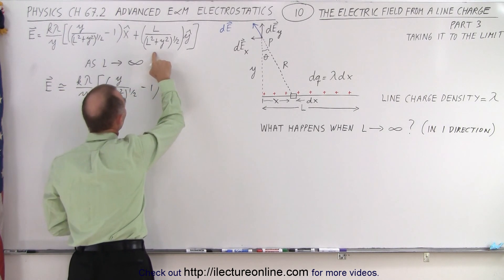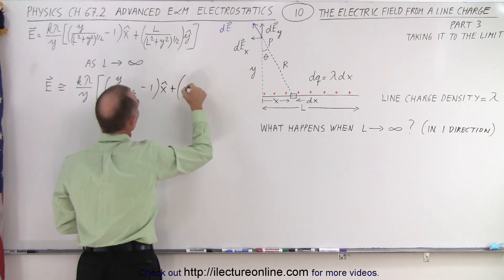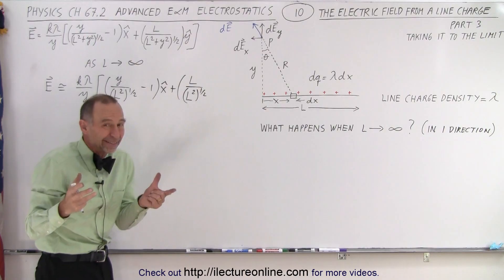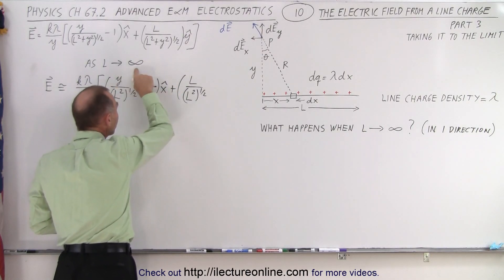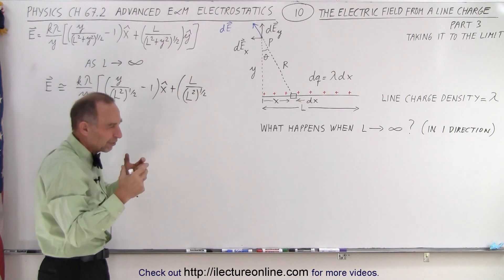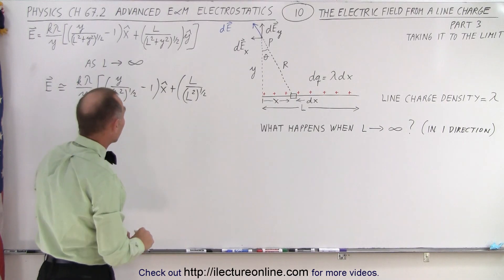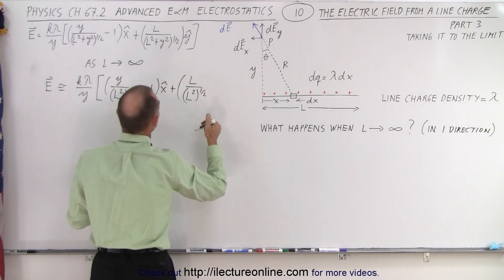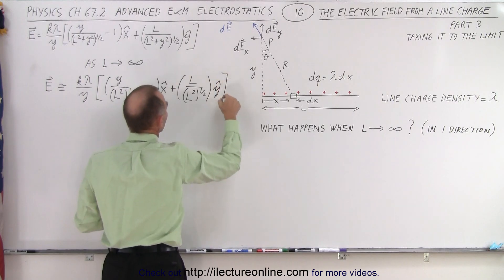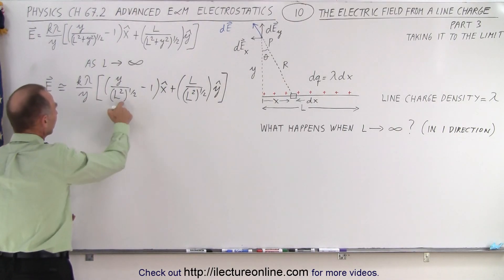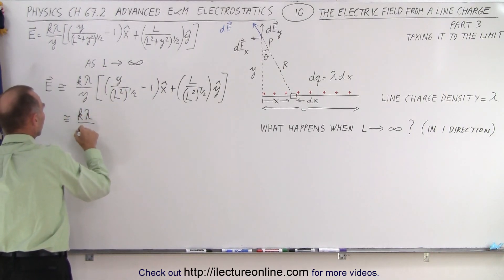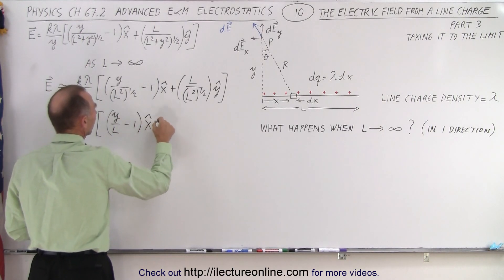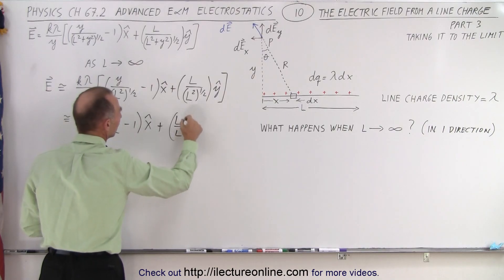Notice that this is in the X direction. And now over here, the same thing — L goes to infinity. So that would be plus, we have now L over L squared to the one-half power. Notice that this Y squared again becomes a very tiny number relative to the L squared. Remember that it approaches infinity — it doesn't become infinity, because once it becomes infinity that's not defined. So we cannot make L infinity, but we can let L get close to infinity. And that means Y squared essentially becomes zero in reference. That's then in the Y direction.